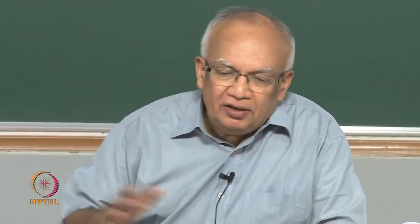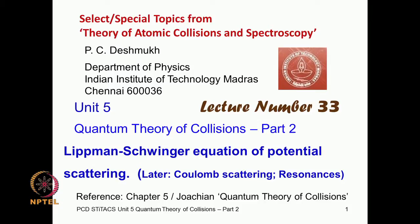Welcome to Unit 5 of this course, again on collisions — I will call it Part 2 of the quantum theory of collisions, because the first part already had 11 or 12 lectures in Unit 1. Then we took a detour and did some second quantization, random phase approximation, and Feynman diagrams in Units 2, 3, and 4. Now we are resuming our discussion on quantum collisions. In this unit we will begin with the Lippmann-Schwinger equation for potential scattering, and subsequently we will also do the Coulomb scattering and then the resonances.